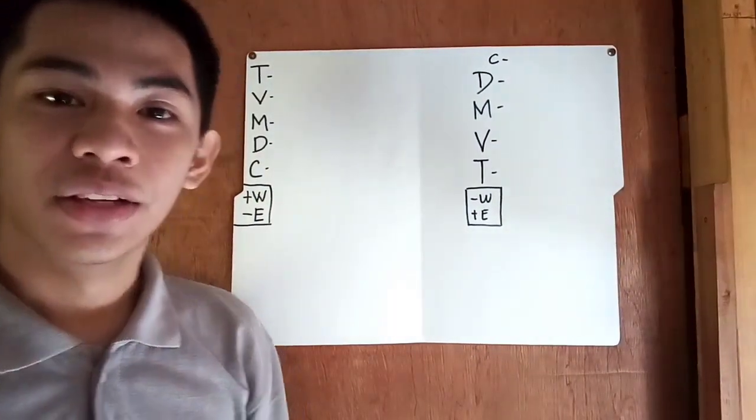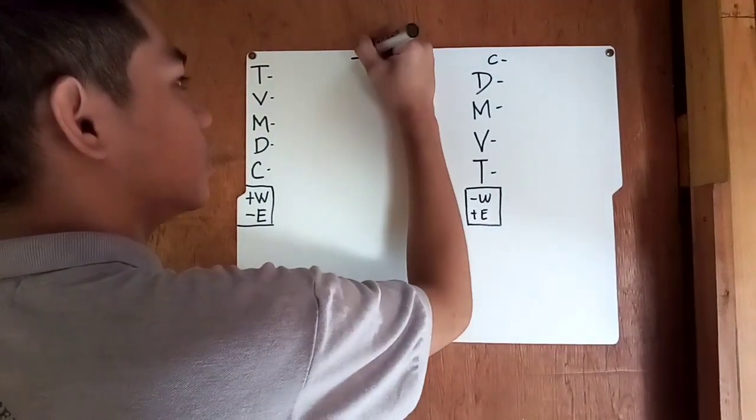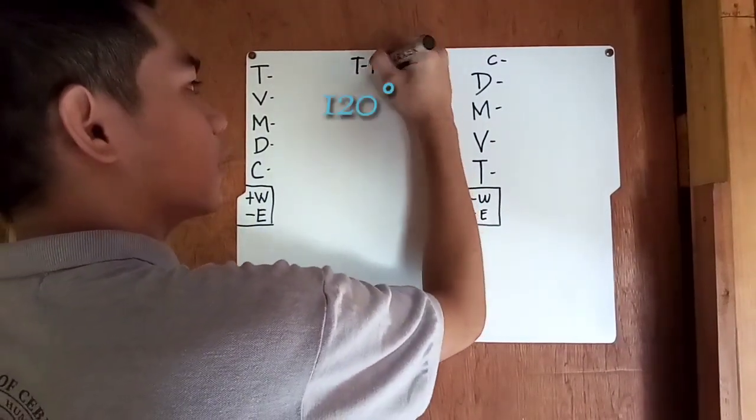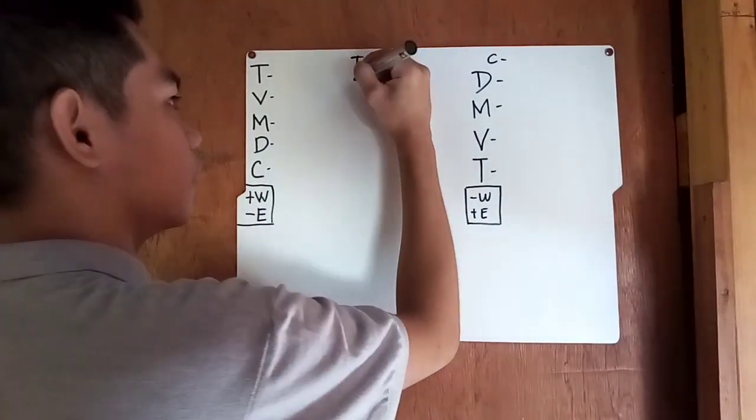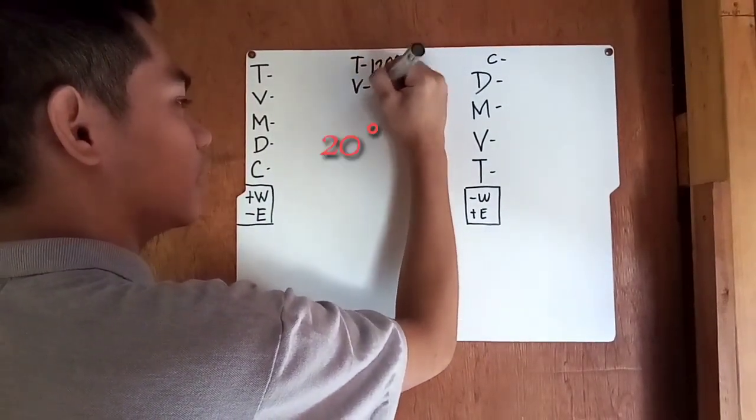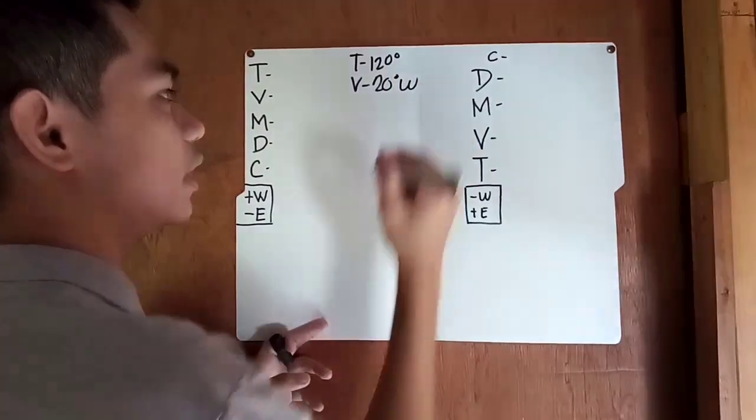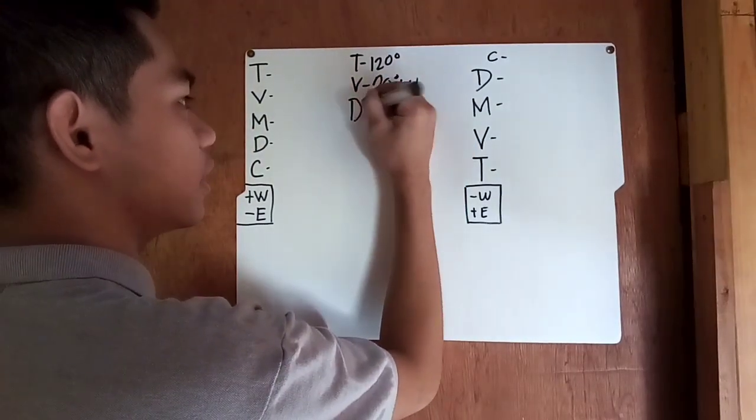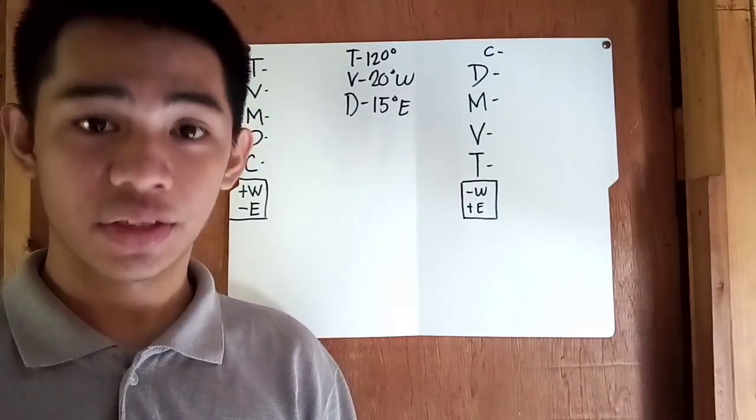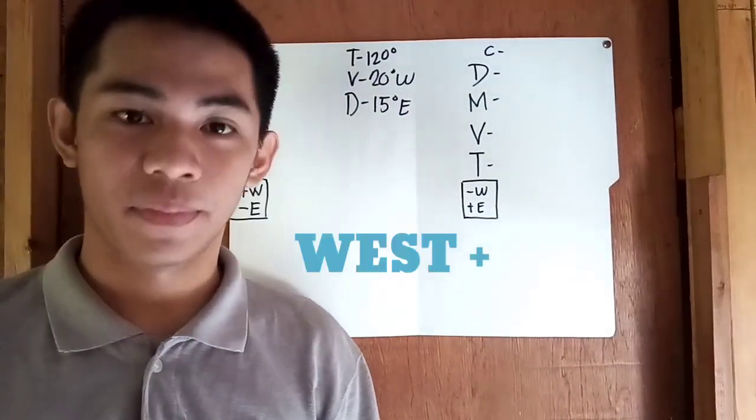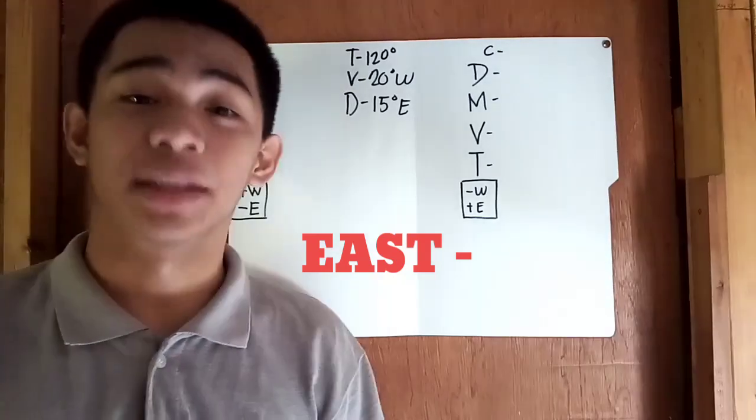So we have a given of true course is 120 degrees, while variation is 20 degrees westerly and deviation is 15 degrees easterly. And if it's the west we must add the sum, while east we must subtract.